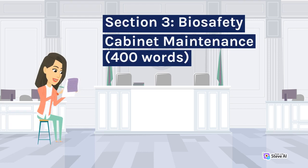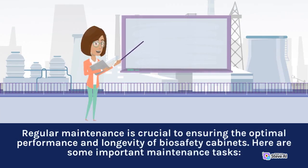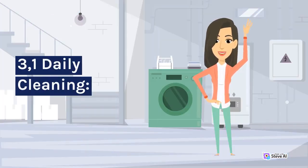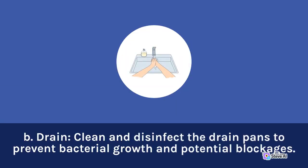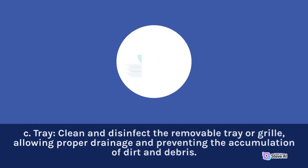Section 3: Biosafety Cabinet Maintenance. Regular maintenance is crucial to ensuring the optimal performance and longevity of biosafety cabinets. Daily Cleaning: A. Surfaces: Wipe down the interior surfaces with an appropriate disinfectant, using lint-free disposable wipes, to maintain cleanliness and prevent cross-contamination. B. Drain: Clean and disinfect the drain pans to prevent bacterial growth and potential blockages. C. Tray: Clean and disinfect the removable tray or grill, allowing proper drainage and preventing the accumulation of dirt and debris.